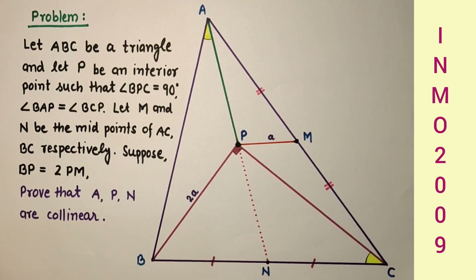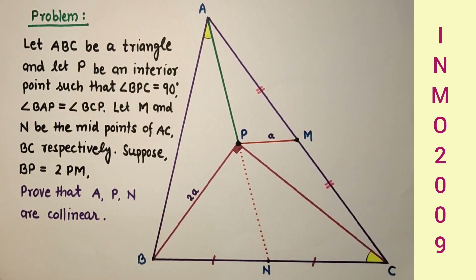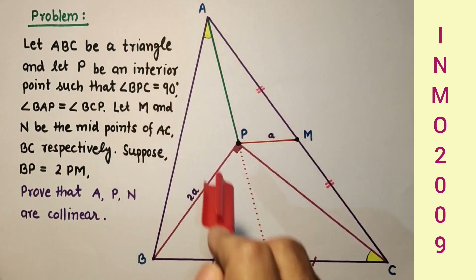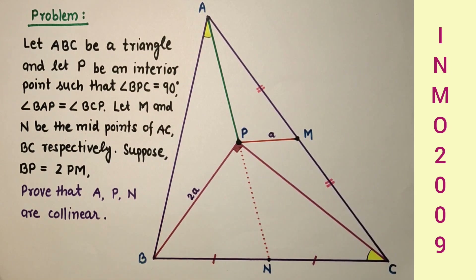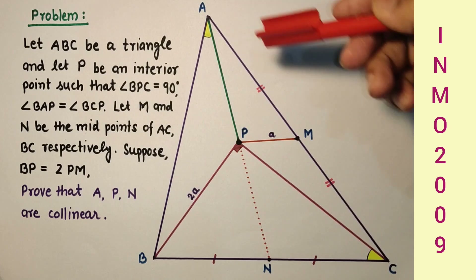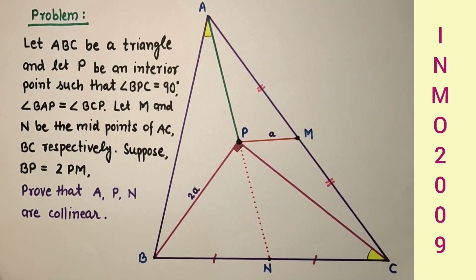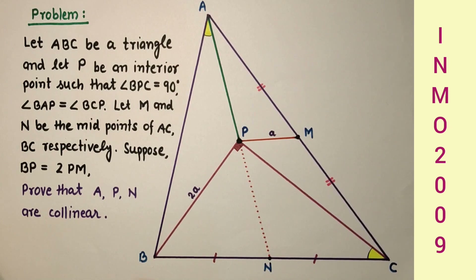In this question we are given a triangle ABC in which P is an interior point such that angle BPC is a right angle and angle BAP is equal to angle BCP — these two angles are equal. M and N are the midpoints of AC and BC respectively. The length of BP is twice the length of PM, and we have to prove that points A, P and N are collinear.